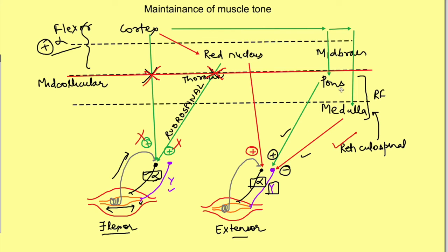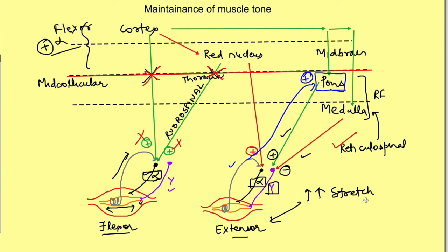The excitatory pathway from the pontine reticular formation — the pontine reticulospinal tract — dominates because sensory signals from the intrafusal fibers facilitate this pathway. Due to increased activity of the pontine reticulospinal tract, which exerts excitatory influence on the gamma motor neuron, the stretch reflex becomes more sensitive. The gamma motor neuron stretches the intrafusal fiber, increasing afferent activity from the intrafusal fiber, which further activates the alpha motor neuron. Since the alpha motor neuron is activated, the extensor muscle contracts, while flexor muscles remain inactive because the influence from the red nucleus and cortex is missing.